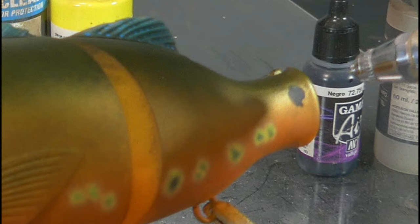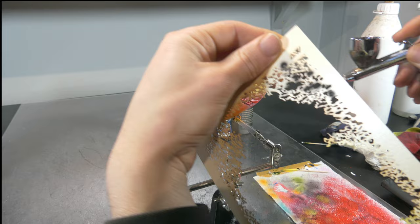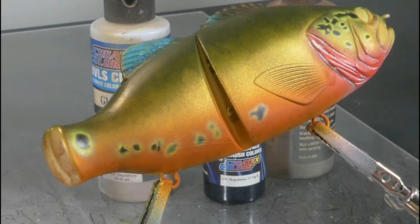So now I am going over that again with my stencil and that's going to create that typical spot that a peacock bass has with that faded yellow edge.